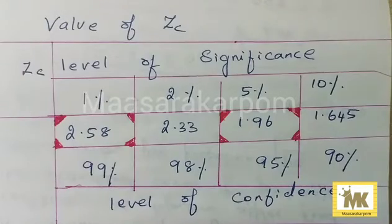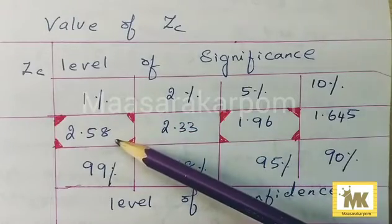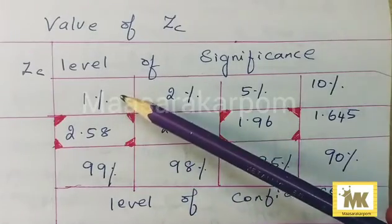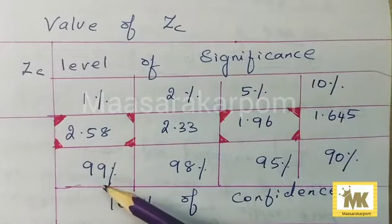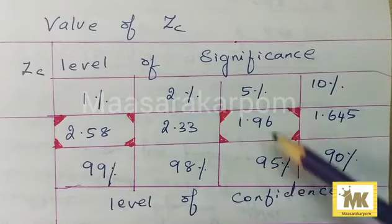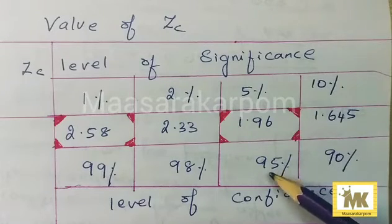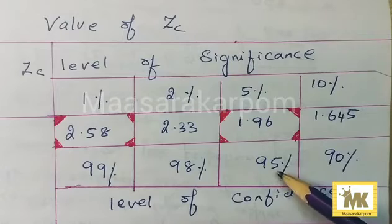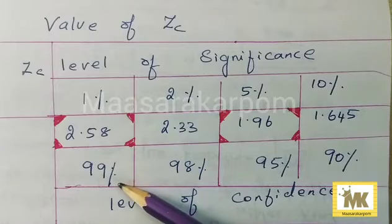At 1% level of significance, Zc is 2.58. Level of significance at 1% or 5%. If confidence interval is 99% or 95%, then level of significance at 5% corresponds to level of confidence at 95%. Level of significance at 1% corresponds to level of confidence at 99%.